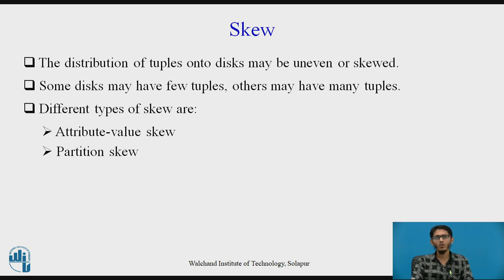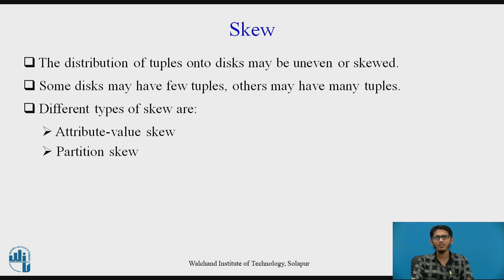Let us first try to understand what is a skew. Sometimes the distribution of tuples onto multiple disks may be uneven or skewed, meaning some disks may have less number of tuples and some may have more. This situation happens when we partition our database, generally in the form of horizontal partitioning, and distribute the tuples onto multiple machines.